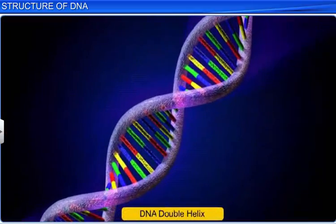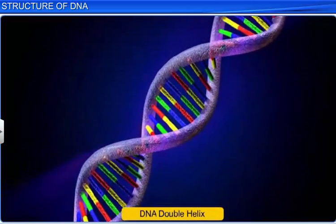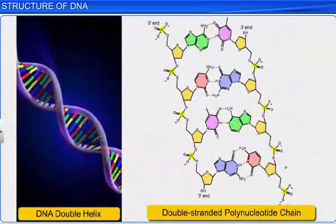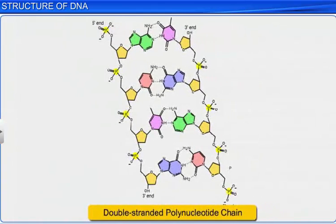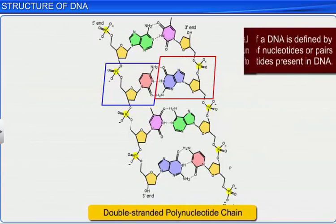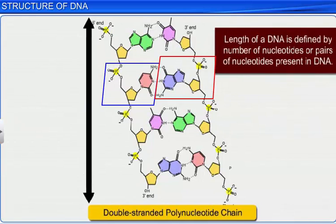DNA derives its name from deoxyribonucleic acid, a type of nucleic acid. Nucleic acids are made up of polynucleotide chains, which are formed by several nucleotides or molecules that make up the structure of DNA when bonded together. In fact, the length of a DNA is defined by the number of nucleotides or pairs of nucleotides present in the DNA.